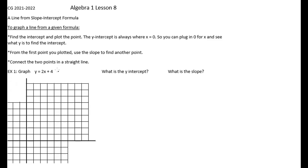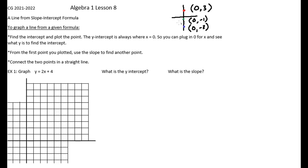We first need to find the intercept and plot that point. The y-intercept is always where x equals zero. On my coordinate grid, this is my y-axis. Wherever my y-intercept is, that point might be zero in the x-direction and three in the y-direction — so the red dot is the point (0, 3). The green dot might be (0, -1), and the blue one might be (0, -3). All of them are on the y-axis and they all have x as zero.